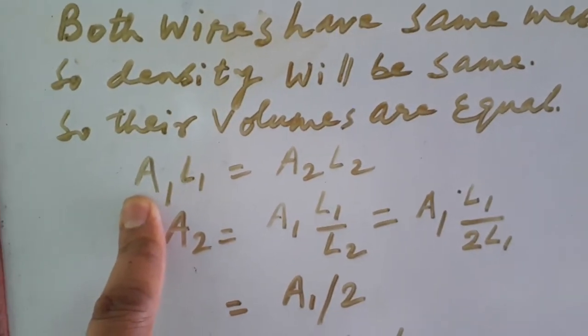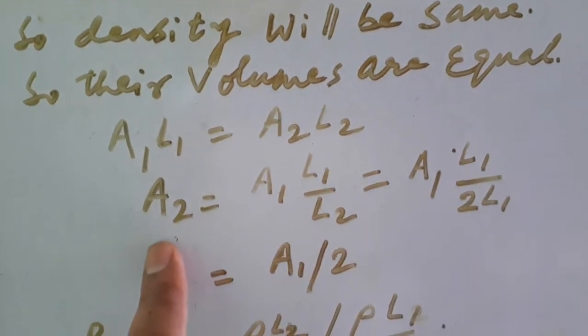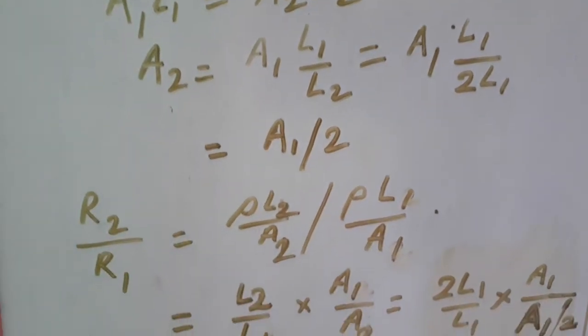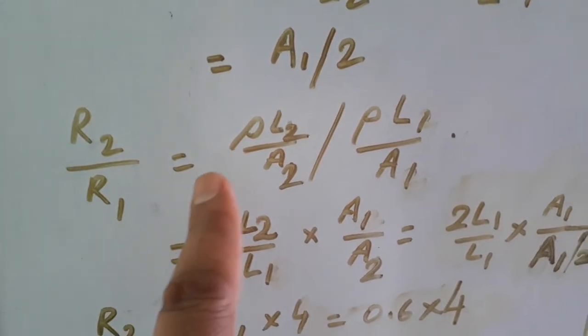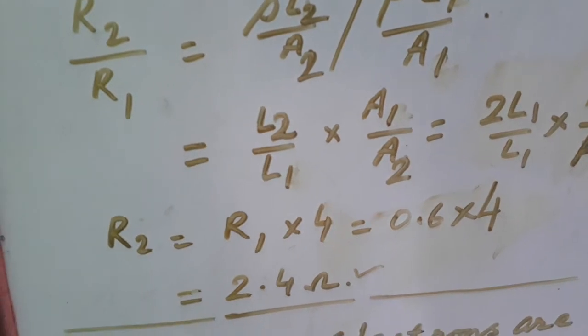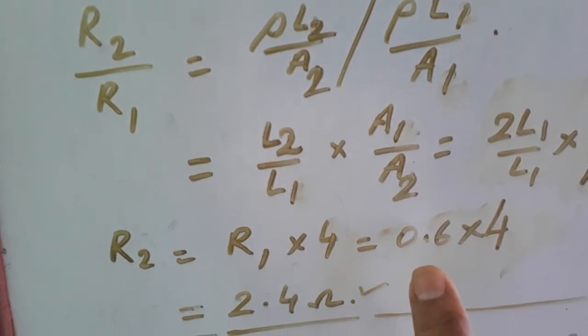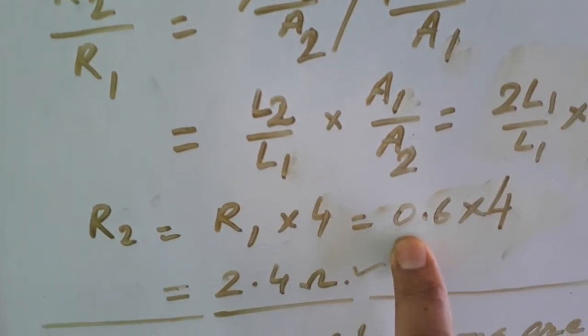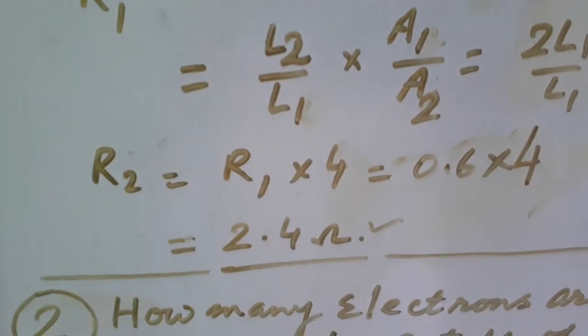Equalize the volume in both the cases: A1 L1 equal to A2 L2. You will get the value of A2 equal to A1 by 2. Thereafter you have to take the ratio of R2 by R1. Putting the value of R2 and R1 you will get R2 equal to R1 into 4. Put the value of R1 0.6 and multiply it by 4, you will get 2.4 ohm.